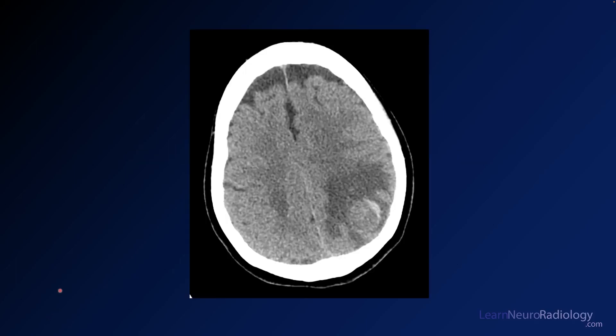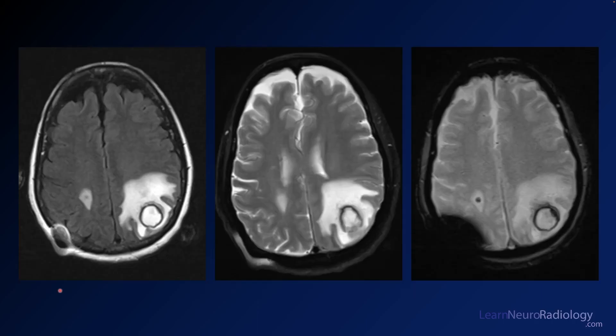Here we have a single image from a CT. Take a look at that and kind of formulate where you think the major abnormalities are. Now we have some MR images through approximately the same level in the same patient. On the left you have a FLAIR, in the middle a T2, and on the right a blood-sensitive sequence such as a GRE.